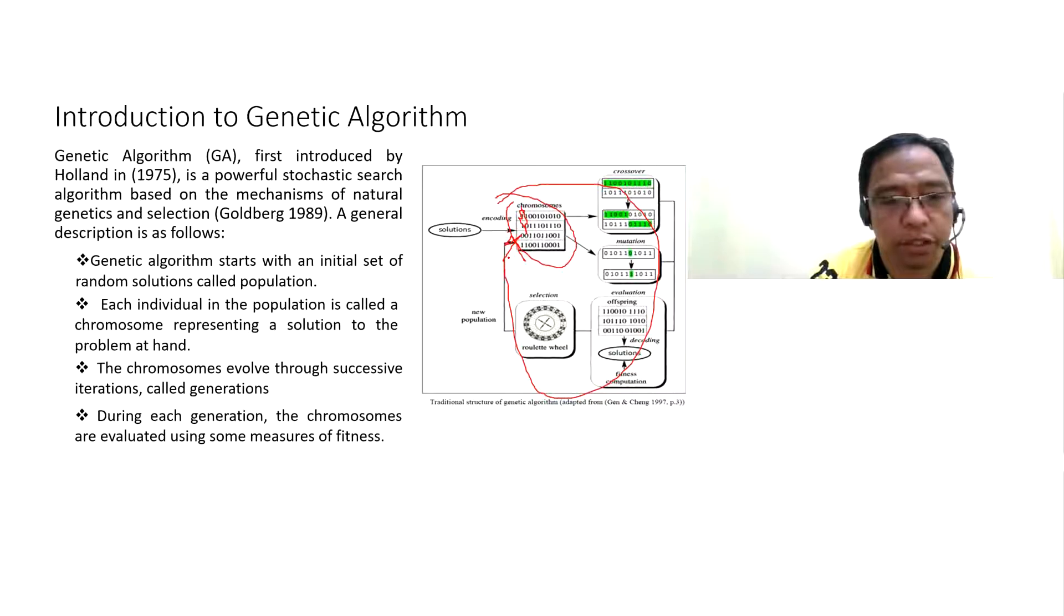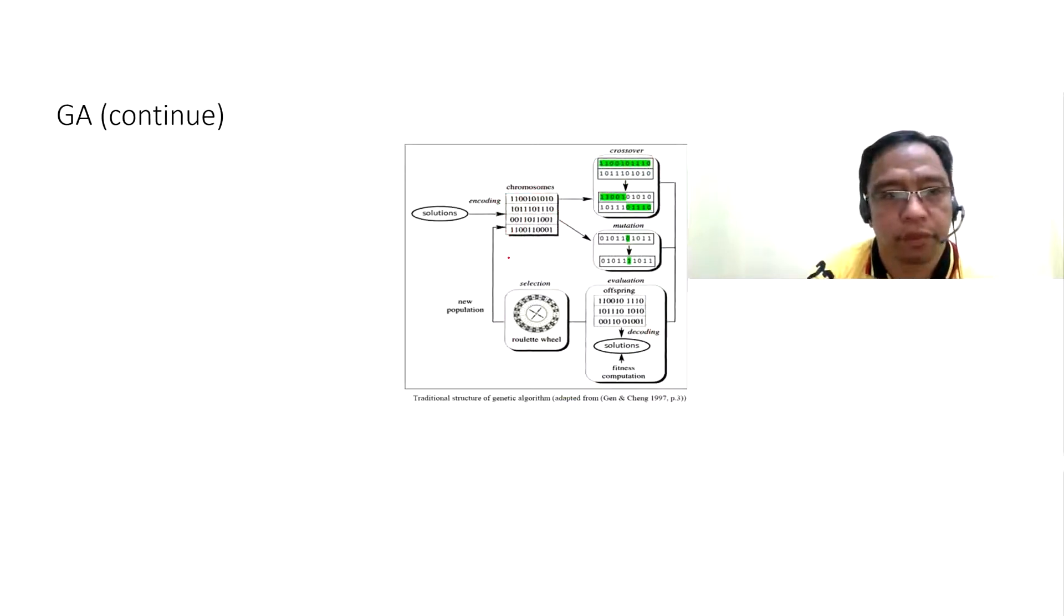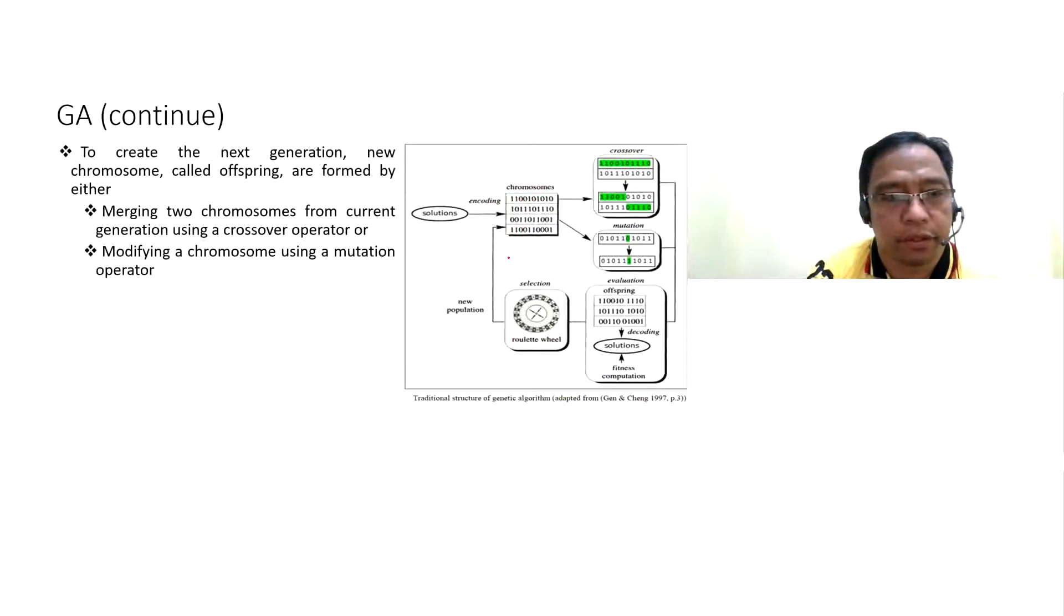During each generation, the chromosomes are evaluated using some measures of fitness or fitness function. To create the next generation, new chromosomes called offspring are formed by either merging two chromosomes from current generation using a crossover operator or modifying a chromosome using a mutation operator.